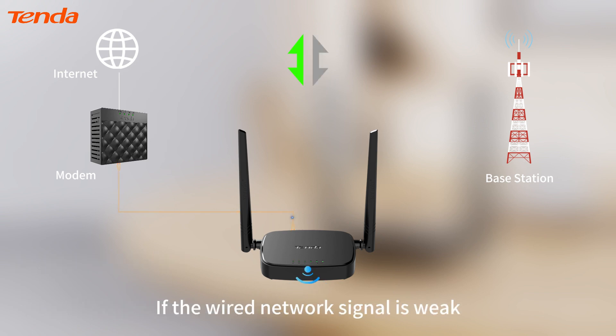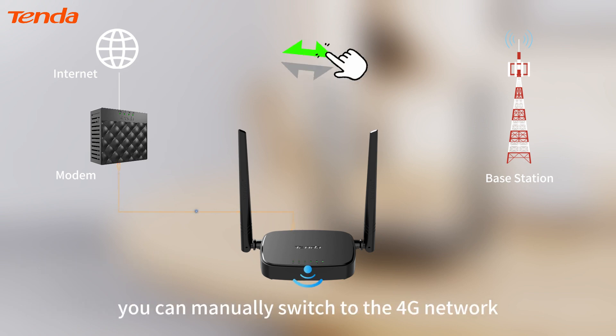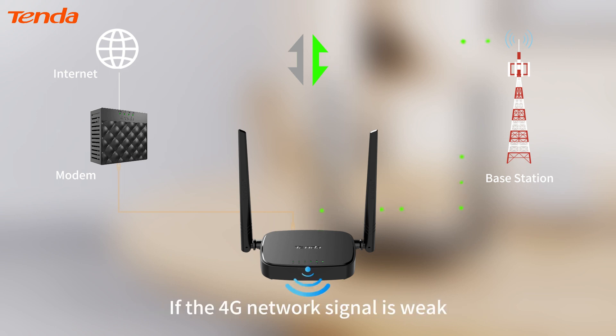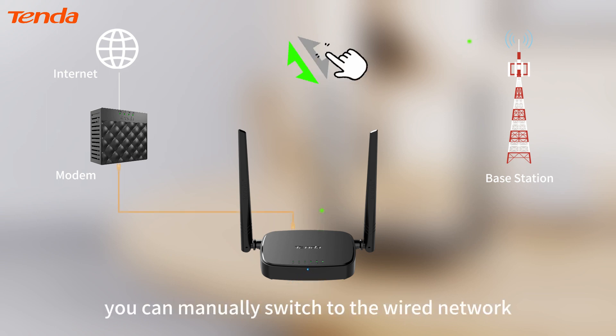Usage scenario two: poor network quality. If the wired network signal is weak, you can manually switch to the 4G network. If the 4G network signal is weak, you can manually switch to the wired network.